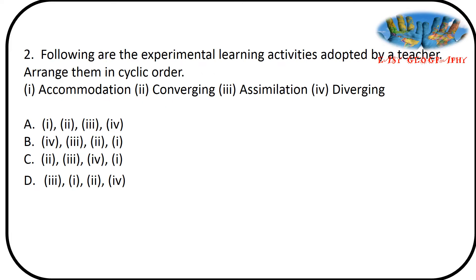Second question. Following are the experimental learning activities adopted by a teacher. Arrange them in cyclic order. The experimental learning activities are Accommodation, Converging, Assimilation and Diverging. The experimental learning starting from Diverging, then Assimilation, next Converging, Accommodation, then leads to Diverging. Answer option B.